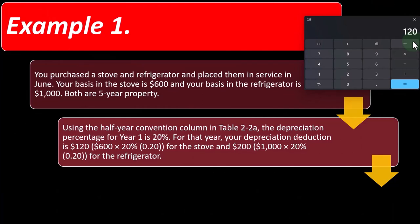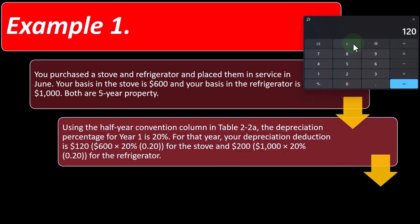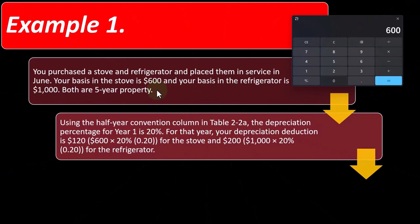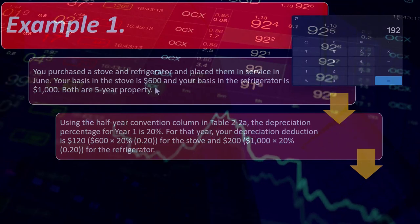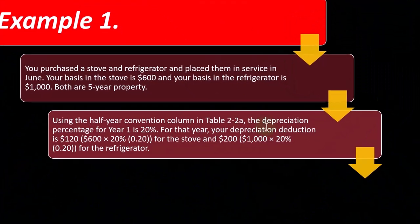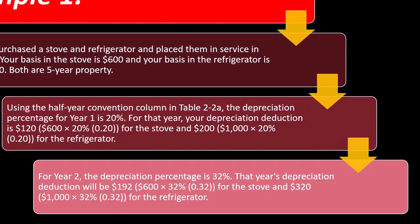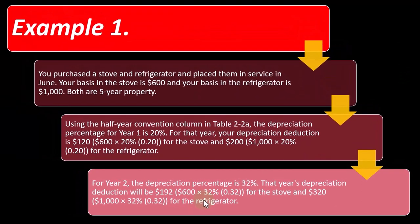However, year two will be different. To calculate it manually, you'd take $600 minus the $120 depreciated last year, then multiply by the double declining rate — whereas with the tables, you just multiply the original $600 by the table percentage. You don't need to keep recalculating the adjusted basis. For year two, the depreciation percent is 32%, so the depreciation deduction is $192 for the stove — which is just $600 times 32% — and $320 for the refrigerator.